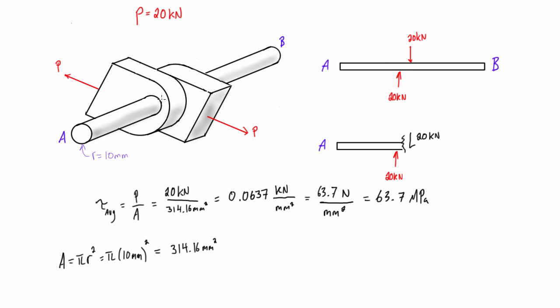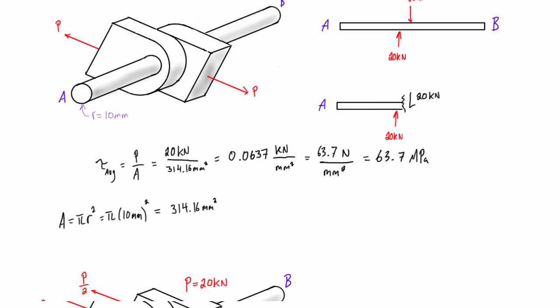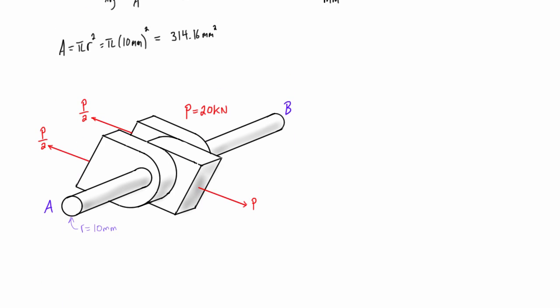inside the rod here we get some shear developing at the plane of intersection or the plane of contact between these two members or these two connections. And when we calculated the average shear, we found that it was 63.7 megapascals. Now this is what we call single shear, and if we modify the problem slightly to be